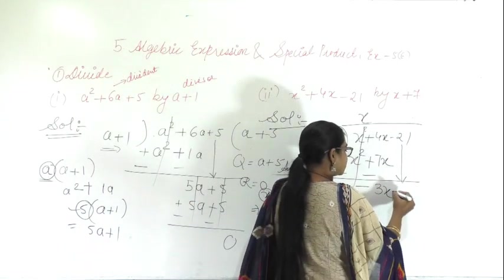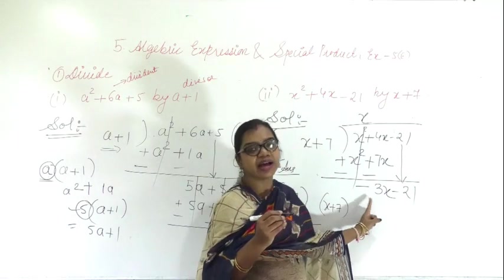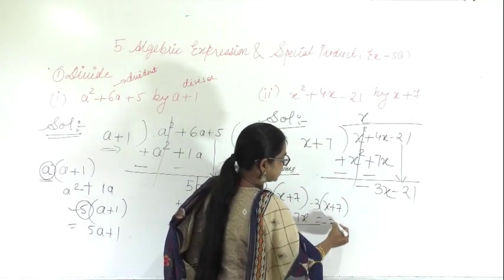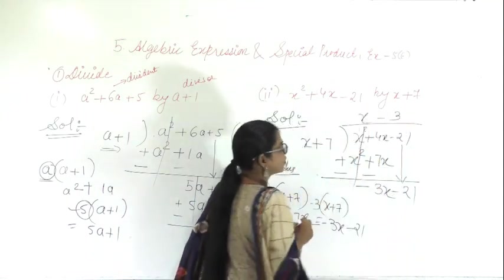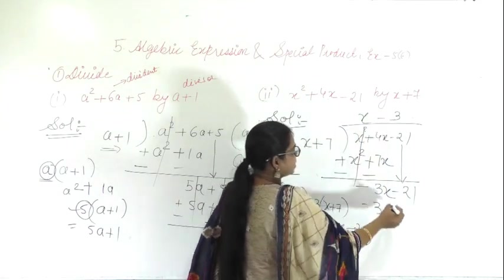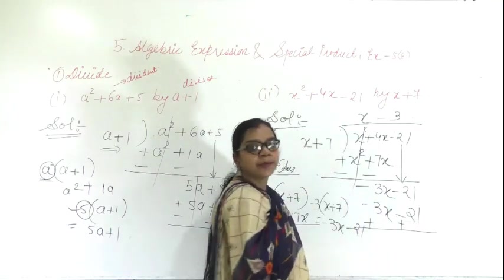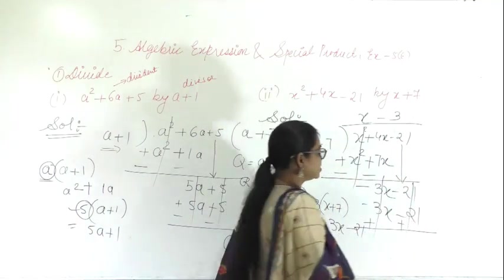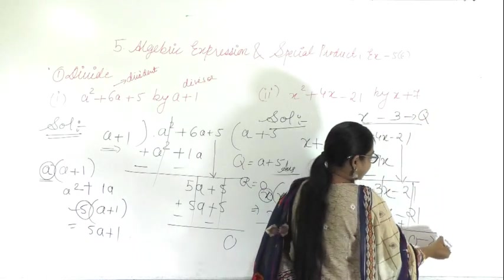Now bring this minus 21 down. Again check x plus 7 — by which number will you multiply to get minus 3x? Multiply with minus 3: minus 3 into x is minus 3x, and minus 3 into 7 gives minus 21. Change the sign — minus becomes plus. Plus 3x and minus 3x cancel, plus 21 and minus 21 cancel. Remainder is 0.